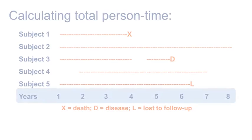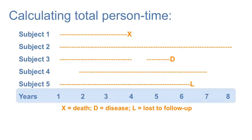Here is a simple example of calculating person time. Each of the horizontal lines represents the person time experienced by one person. Note that there are five persons depicted here, subjects 1 through 5.